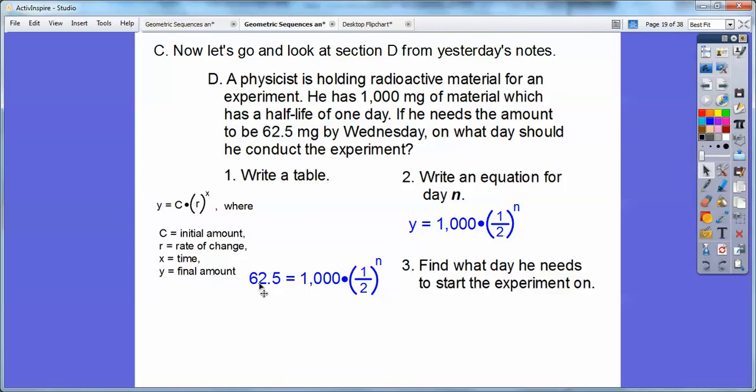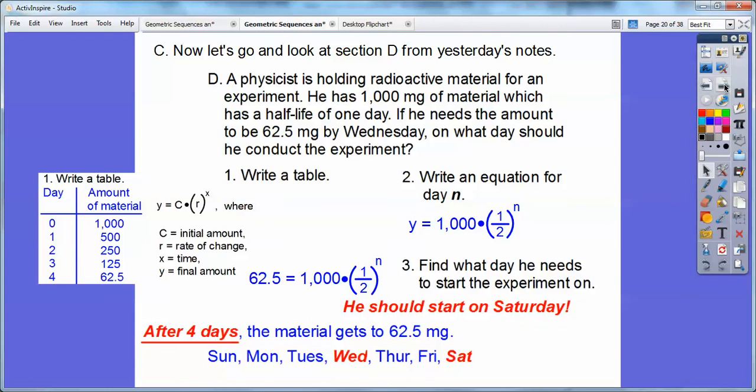Now we don't have calculators in our class, so I'm just going to go ahead and stop right there with that. But if we did have a calculator, we'd divide both sides by 1,000. And when you divide by 1,000, it just moves that decimal over three places to the left. So this would be 0.0625. So 0.0625 would equal 1 half to the N power. And this is how we did it yesterday. We actually made a T-chart right here.